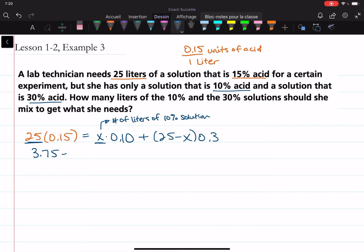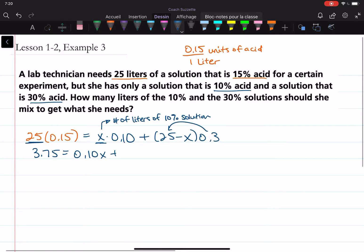And we have equals 0.10X plus distributive property: 25 times 0.3 is 7.5 minus 0.3X.